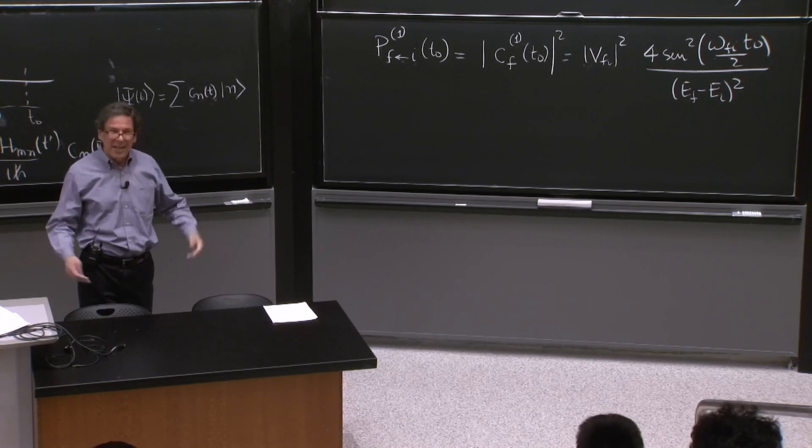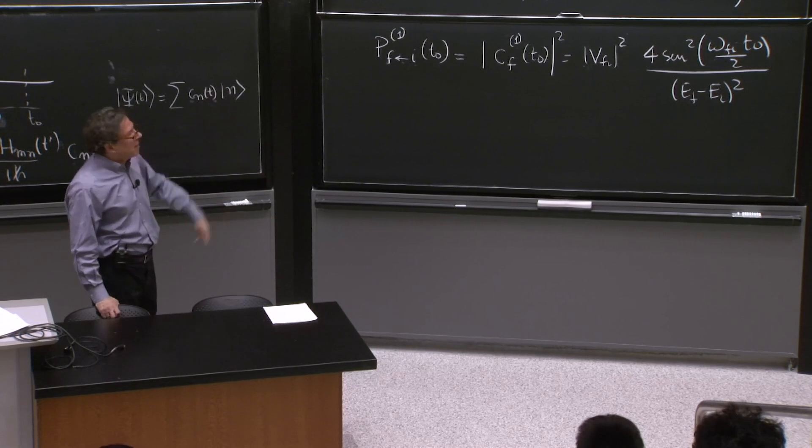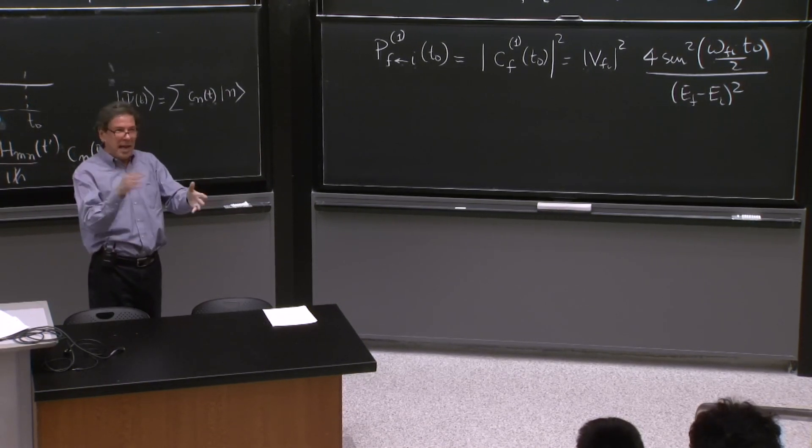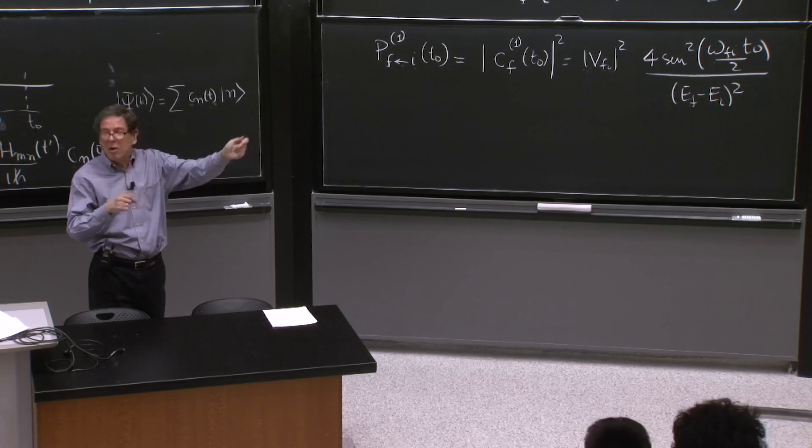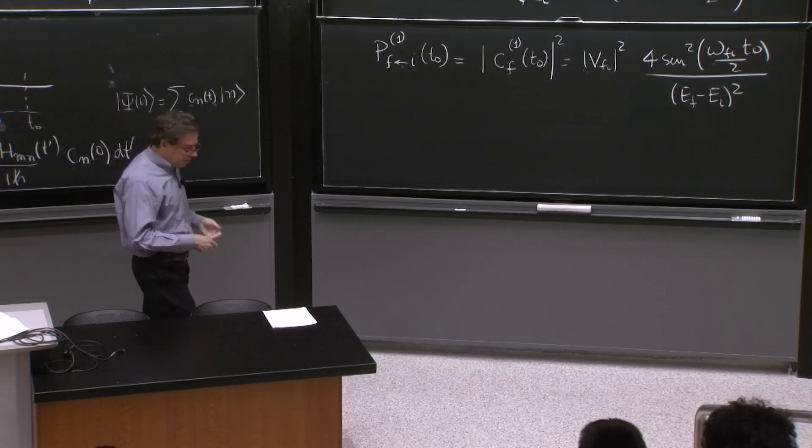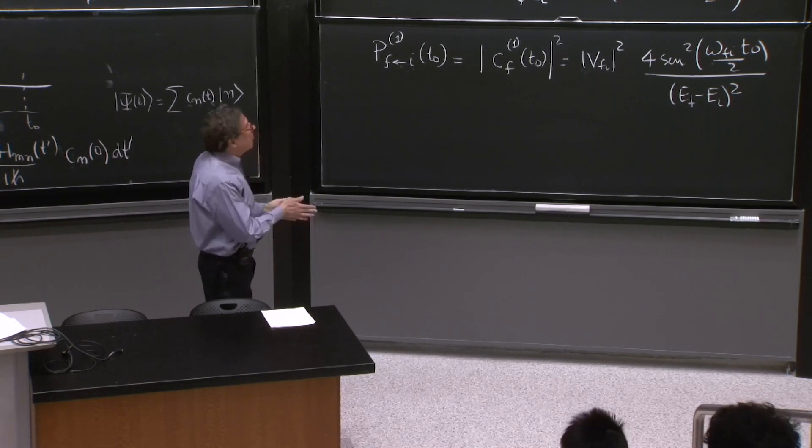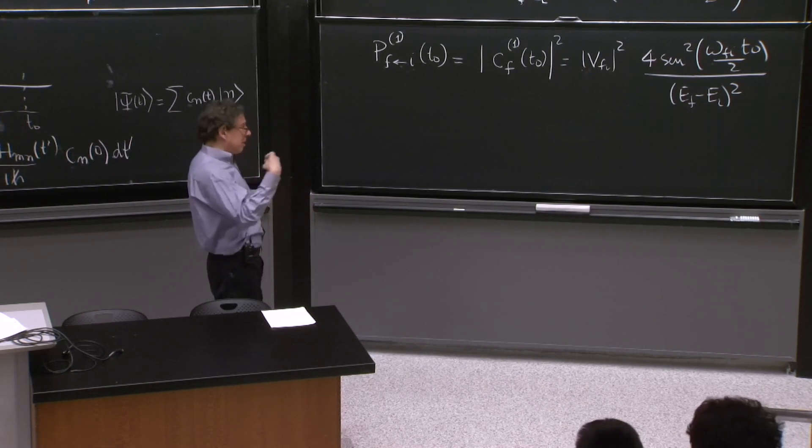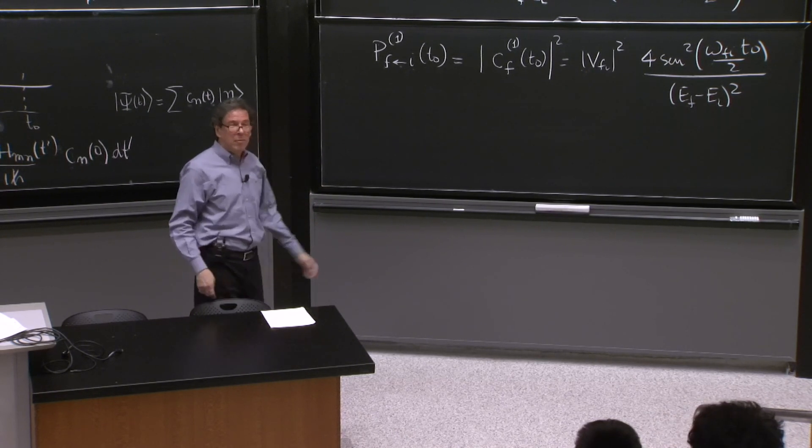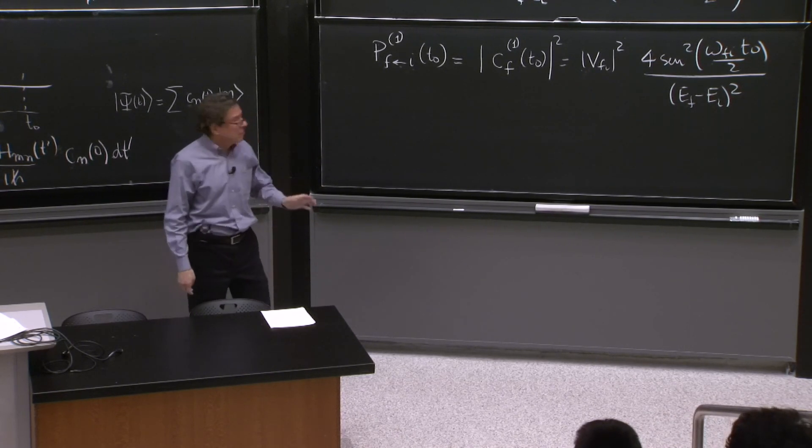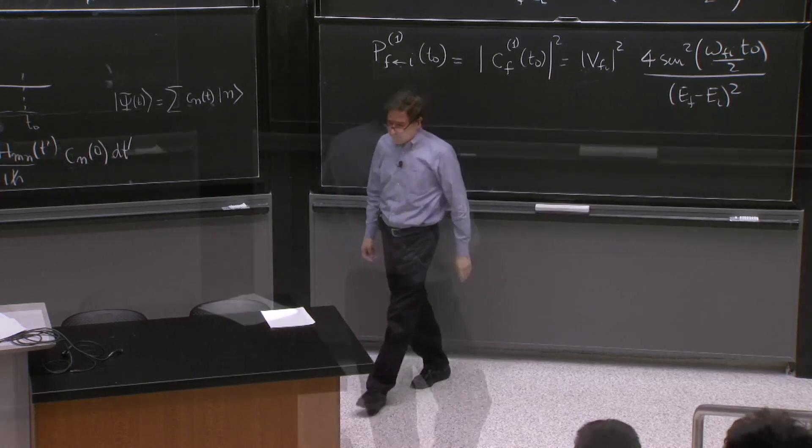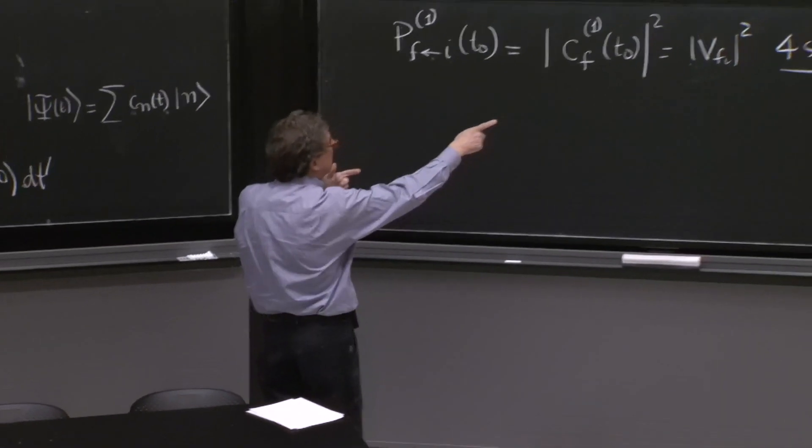Suppose this probability comes out to be 3. You know it's already too big. But if this is 10 to the minus 6 times this function, that's reasonable. You're shining atoms, and 1 in a million goes and gets ionized. That's a reasonable thing. So the perturbation theory is valid for whatever time you use this formula, as long as this number is small. And this could be arranged by having vfi sufficiently small.